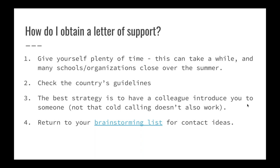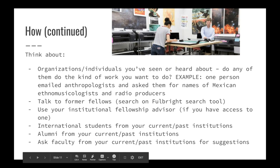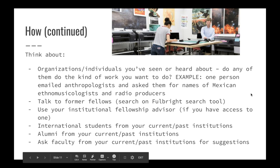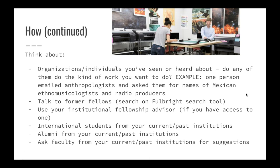If you have that opportunity, reach out to people with whom you've already got some connection. If you're having trouble thinking of who to contact, return to that brainstorming list for contact ideas to build up your list of possibilities. Think about organizations or individuals you've heard about related to the topics you're interested in. One good example: a person emailed anthropologists and asked them for the names of Mexican ethnomusicologists and radio producers. Getting a reference from someone gives you a built-in connection when you reach out to the organization you actually want to affiliate with.